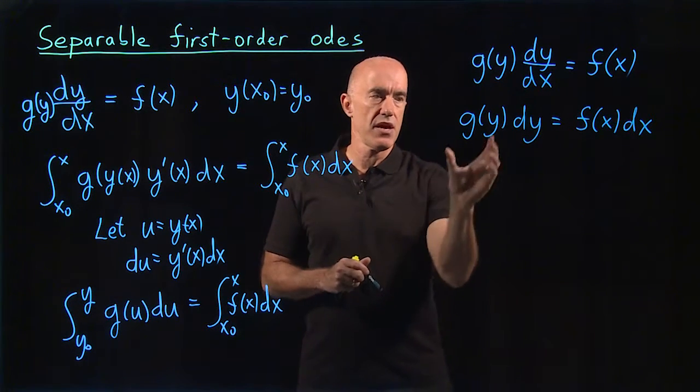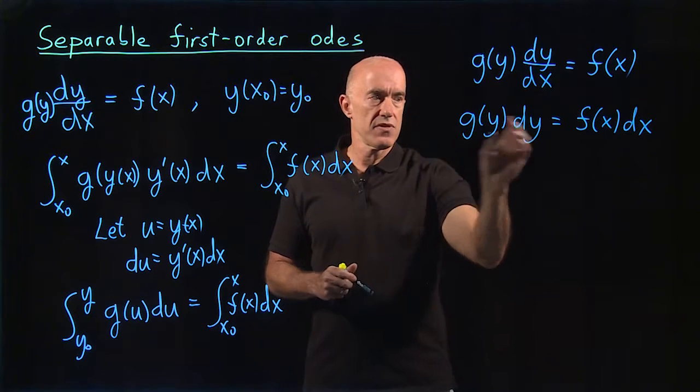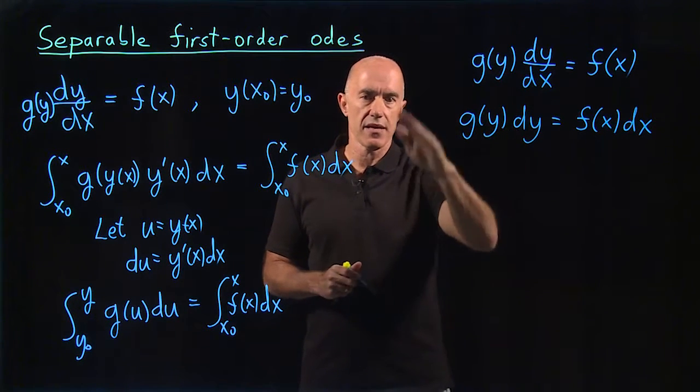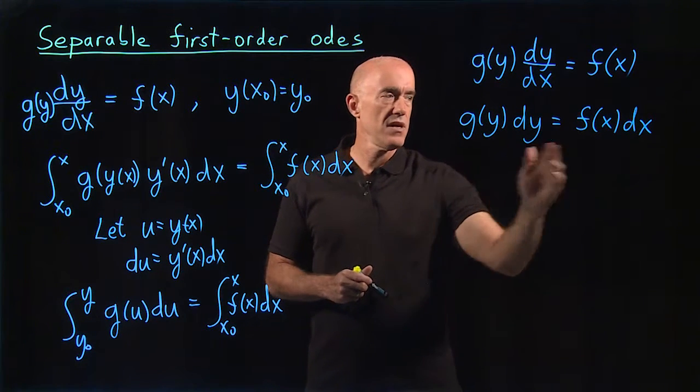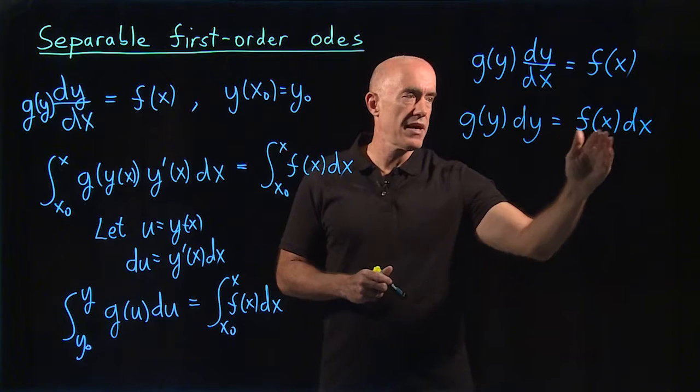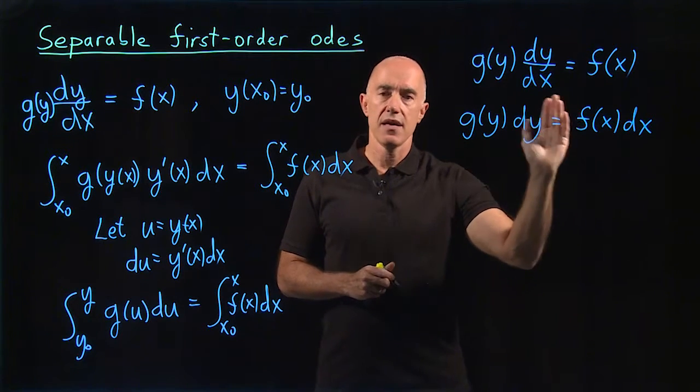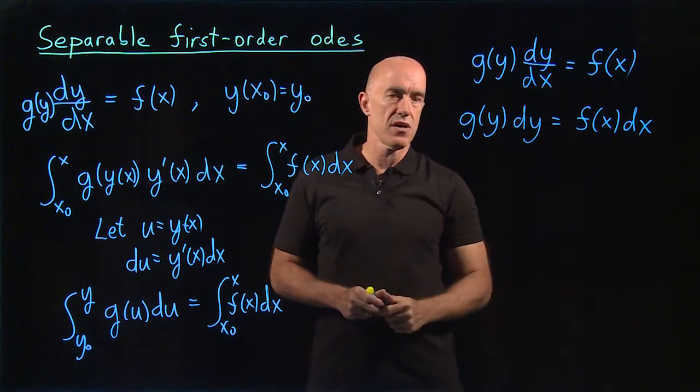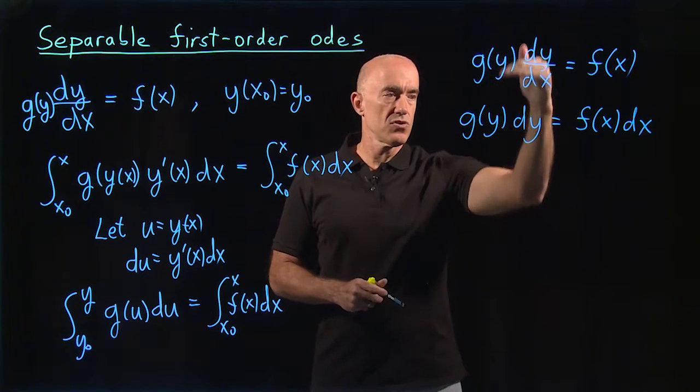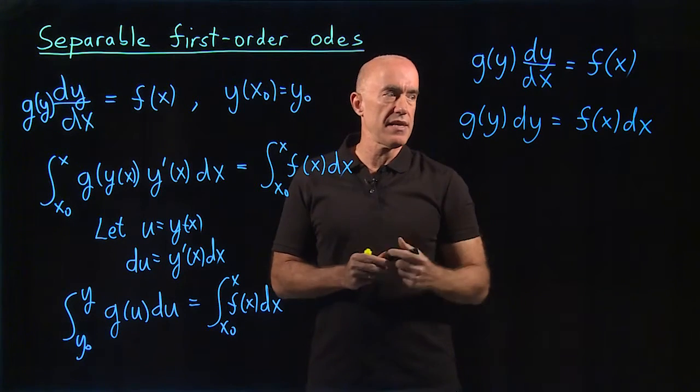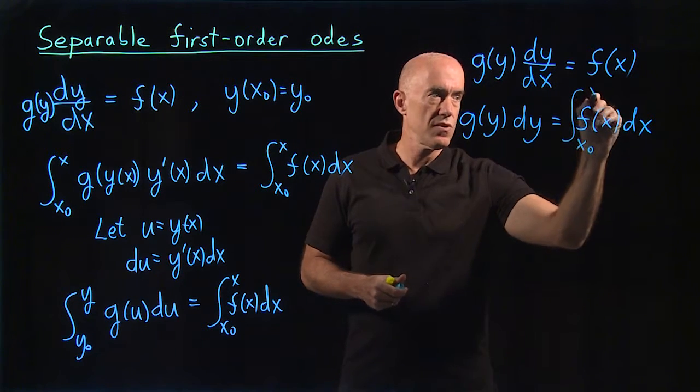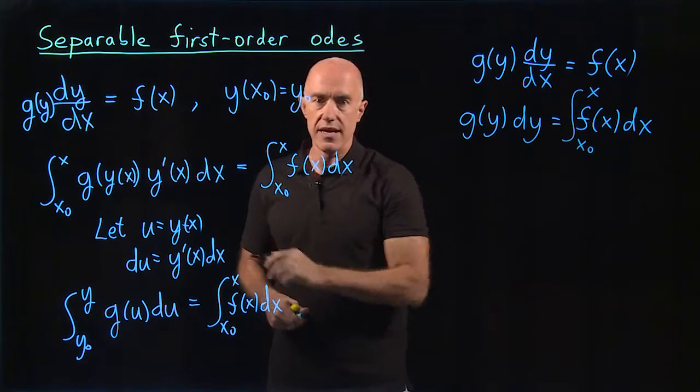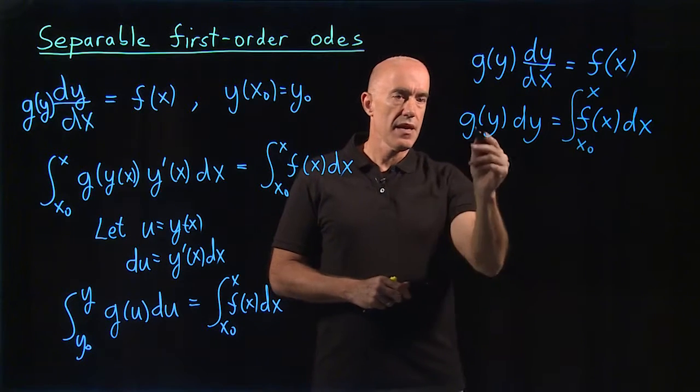That's the separation stage where you have a function of y times dy equals a function of x times dx. So it's very important here that you have this dy multiplying everything here on the left, and there's no x dependence on the left. And this dx is multiplying everything here on the right, and there's no y dependence on the right. So getting to this stage, you then integrate. So here we integrate from x naught to x, that will be our right hand side here.